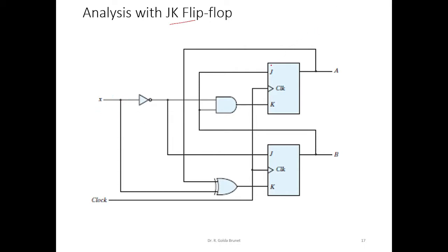Now let us try to compute what is the input for the J and K inputs of the flip-flops. Since there are two JK flip-flops, we will use labels to differentiate them. I will use JA to represent the J input of flip-flop A, and KA for the K input of flip-flop A. Similarly, we have JB and KB.